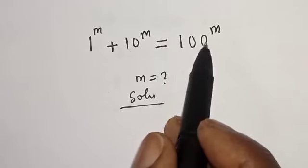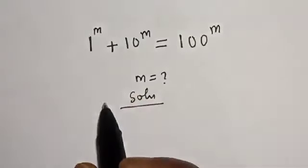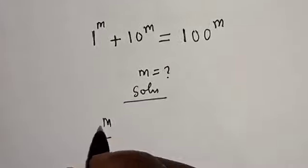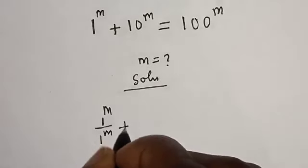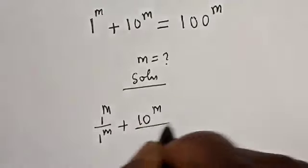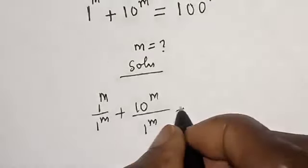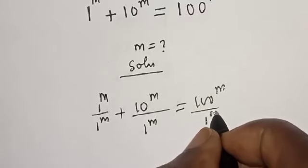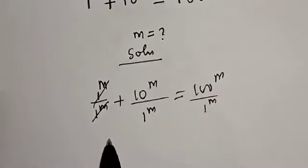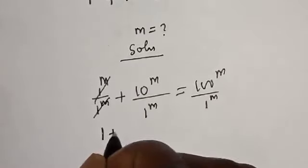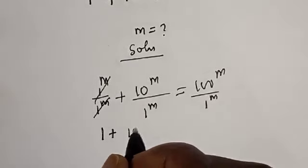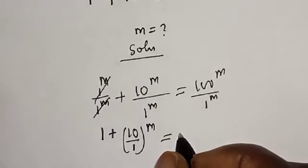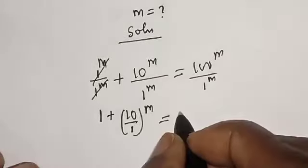Solution: we have the equation 1^m plus 10^m is equal to 100^m. Let's divide both sides by 1^m. We have 1^m divided by 1^m, plus 10^m divided by 1^m, is equal to 100^m divided by 1^m. The 1^m terms cancel, giving us 1 plus (10/1)^m is equal to (100/1)^m.